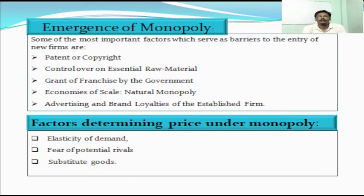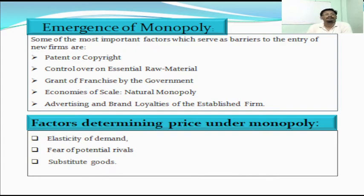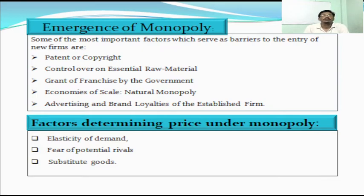For example, defense production-related raw materials, arms production-related raw materials, iron and steel, coal, thermal, and hydel — these are raw material sources on which some productions are dependent, and those productions are monopolized or restricted by the government through licenses to control the use of such essential raw materials. Next, that is the grant of franchisee by the government, which is popular in the private sector. It is also a type of patent or copyright but restricted to a particular area, making production of that commodity monopolized in that area.